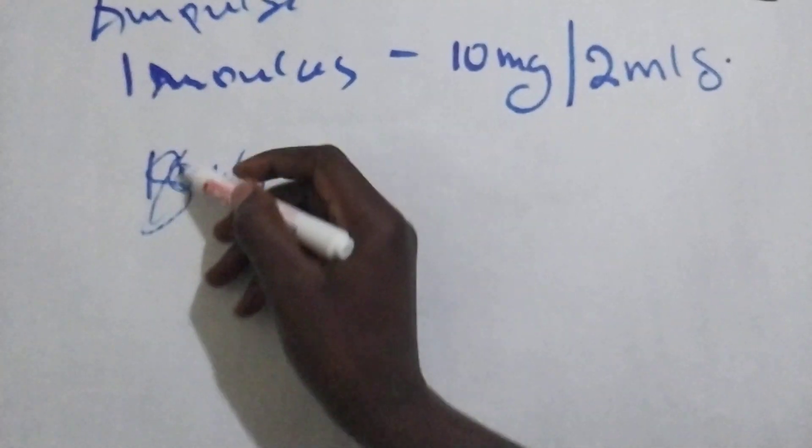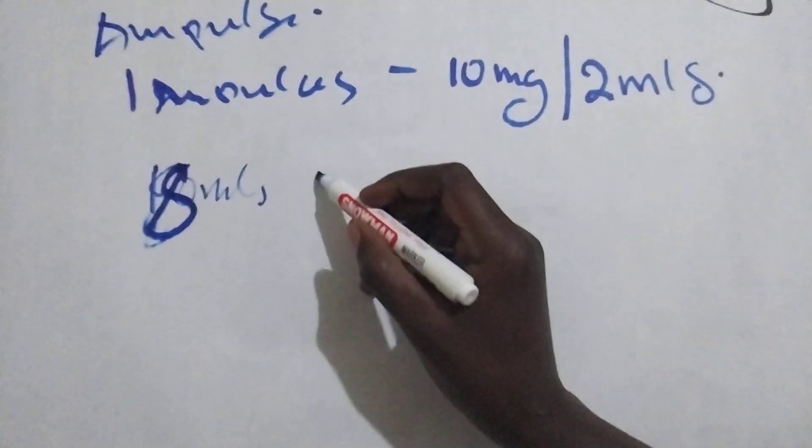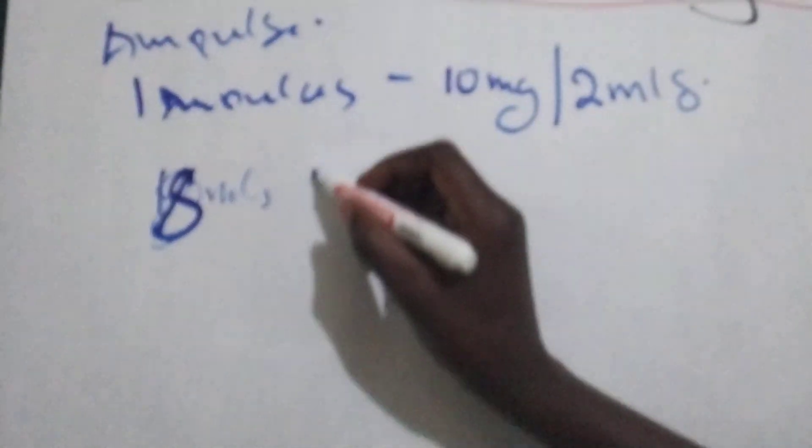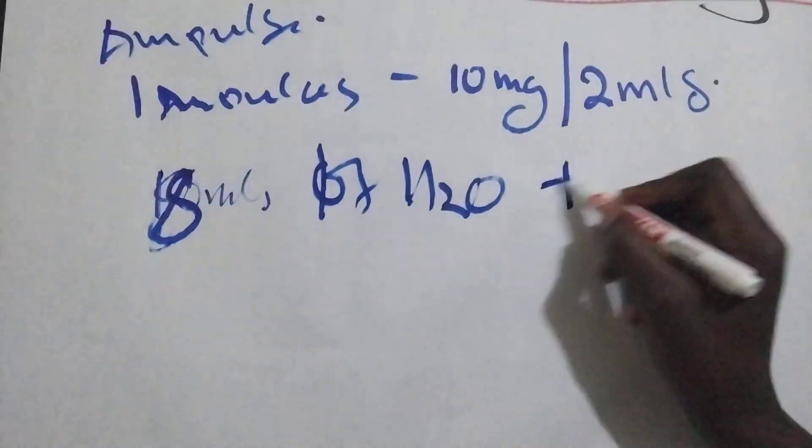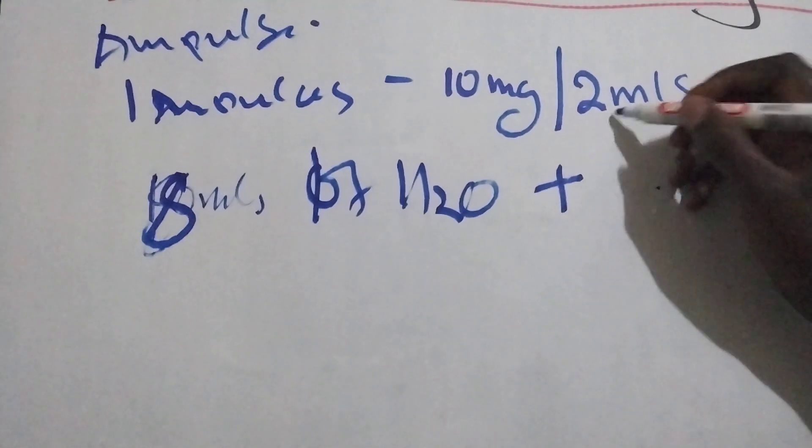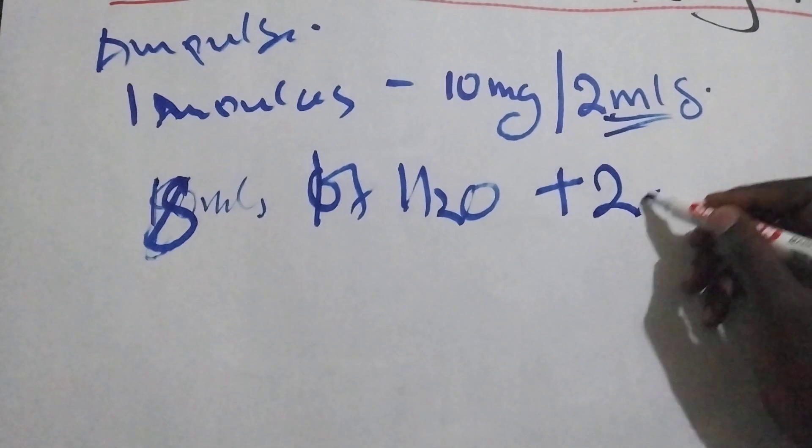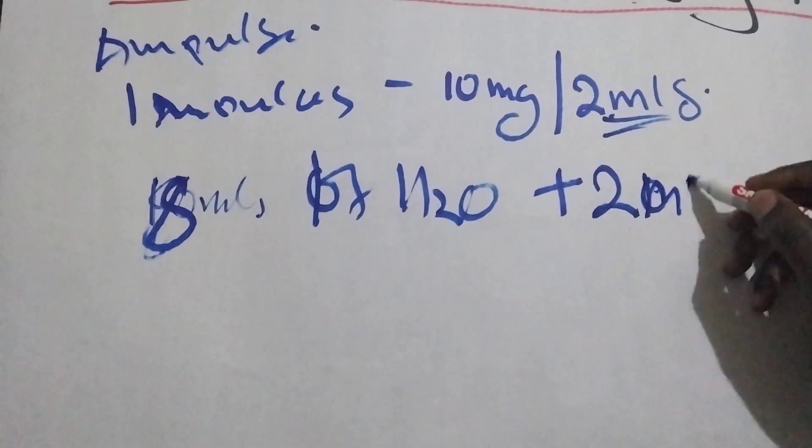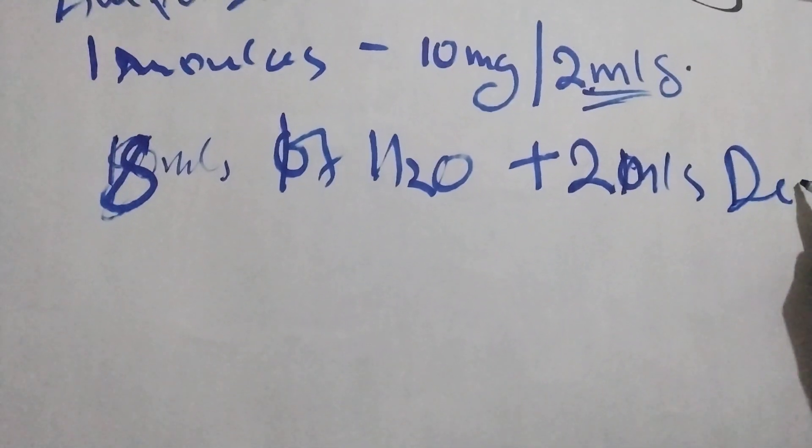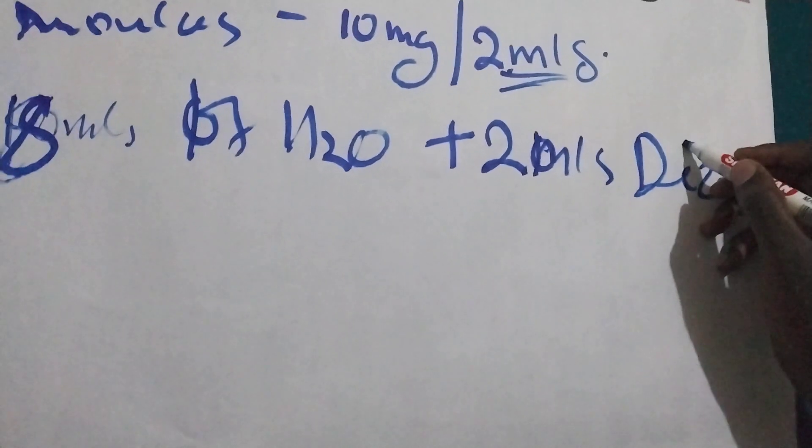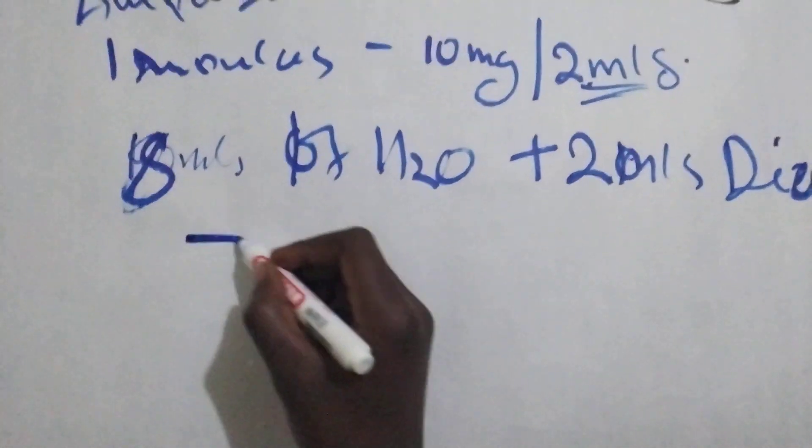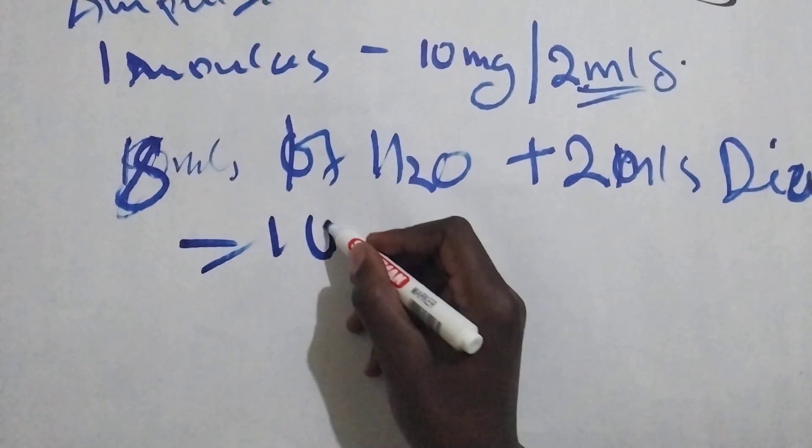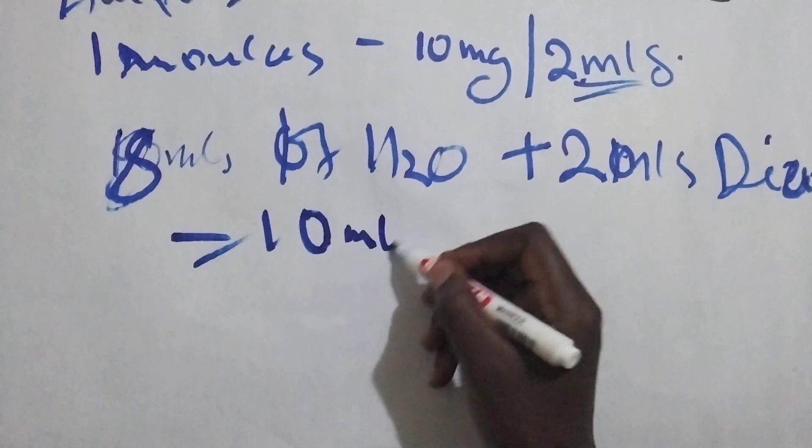Actually, 8 mils. We are going to use 8 mils of water for injection plus the 2 mils of Diazepam. Our Diazepam will become 10 mils.